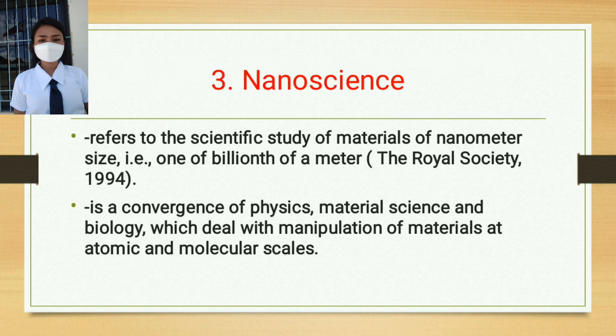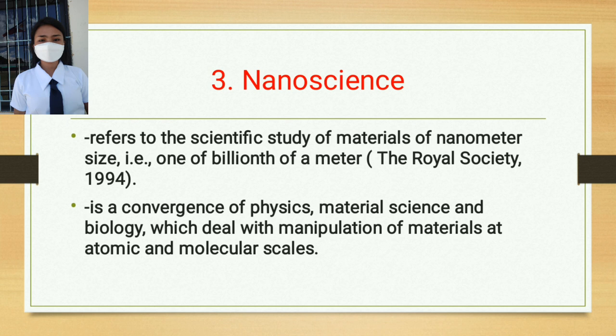Number three is nanoscience, which refers to the scientific study of materials of nanometer size, or one billionth of a meter, according to the Royal Society (1994). Nanoscience is also a convergence of physics, material science, and biology, which deals with the manipulation of materials at atomic and molecular scales. In this technology, they are using atoms and molecules, so you can imagine how small that is.